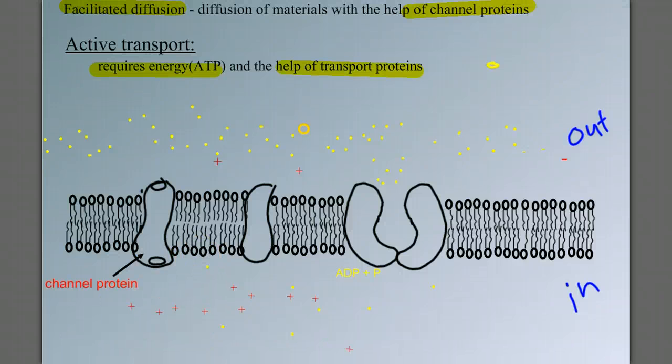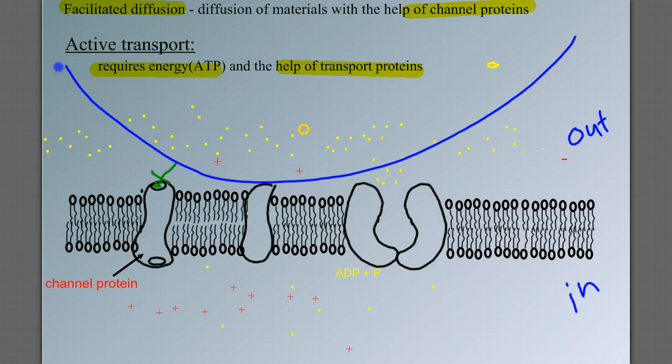Now, what happens if the molecule or the particle we're trying to move in or out of the cell is this? Meaning, on scale, it's much, much bigger. It's obvious that this is never getting through the cell membrane. It's never going to make its way through even one of these channels. It's just not going to happen.